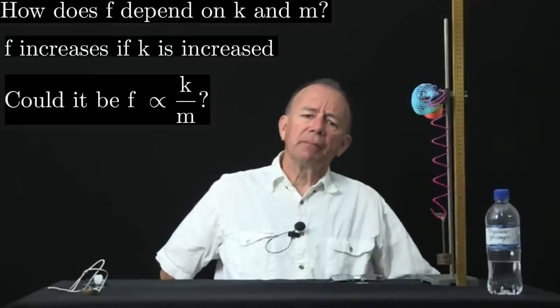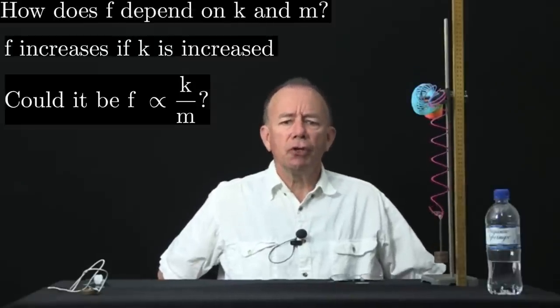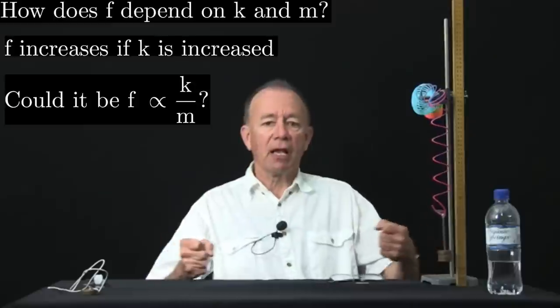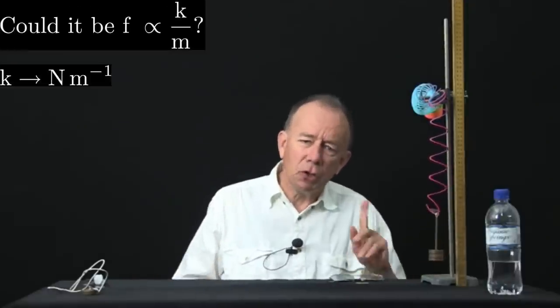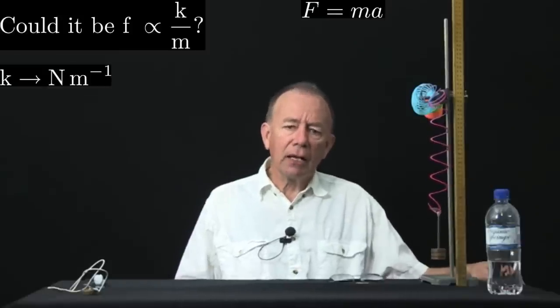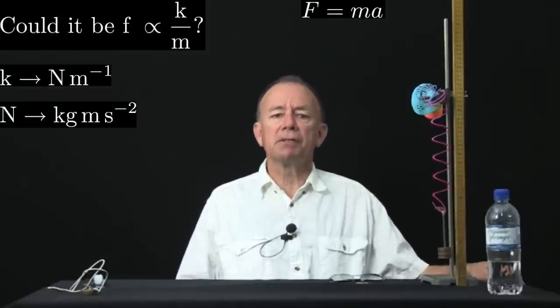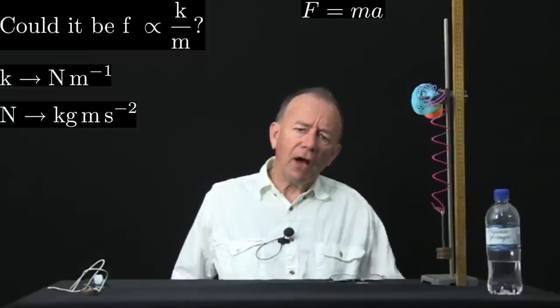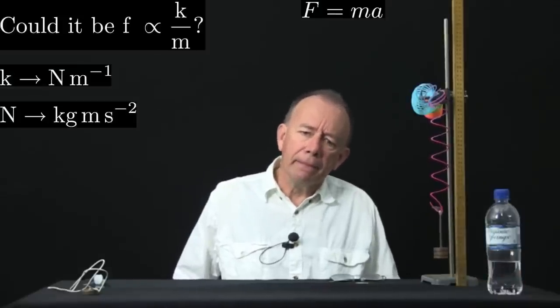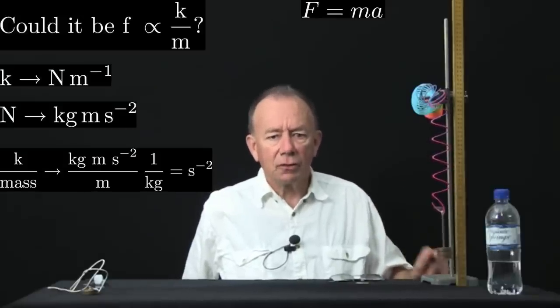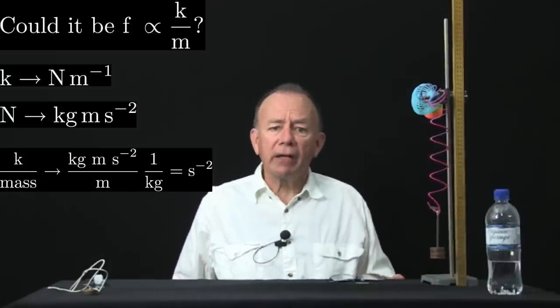However, it can't be proportional to those because of the units involved. The spring stiffness is the force in newtons required to produce an extension in meters, so it's in newtons per meter. And the newtons, think back to Newton's second law, f equals ma. The newton has units of kilogram meters per second per second, force times acceleration. So if we divide k by m, we'll get kilogram meters per second per second, divided by meters, divided by kilograms, so we get seconds to the minus 2.